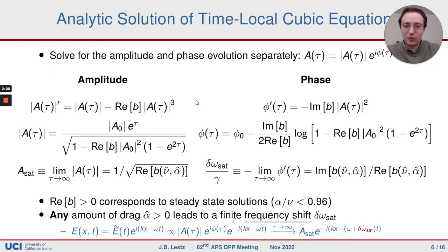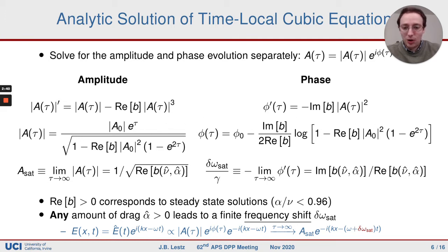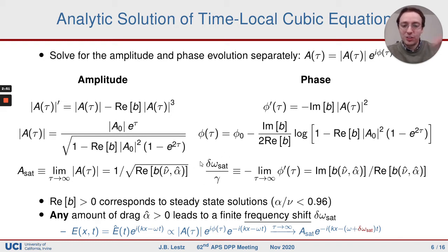You can solve this exactly by splitting the complex mode amplitude A into a magnitude and a phase phi, getting a closed expression for both quantities. You can see how the saturation depends on alpha over nu, which I'll show on the next slide. There's a qualitatively new feature when you introduce drag: you get a frequency shift — a linearly evolving phase at long times corresponding to a frequency shift that you only get with non-zero drag.